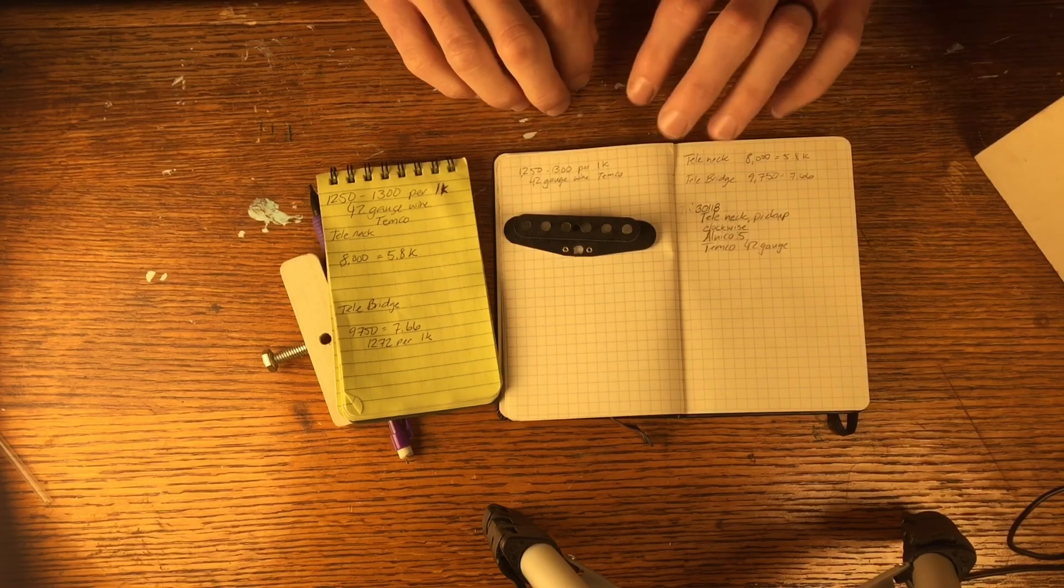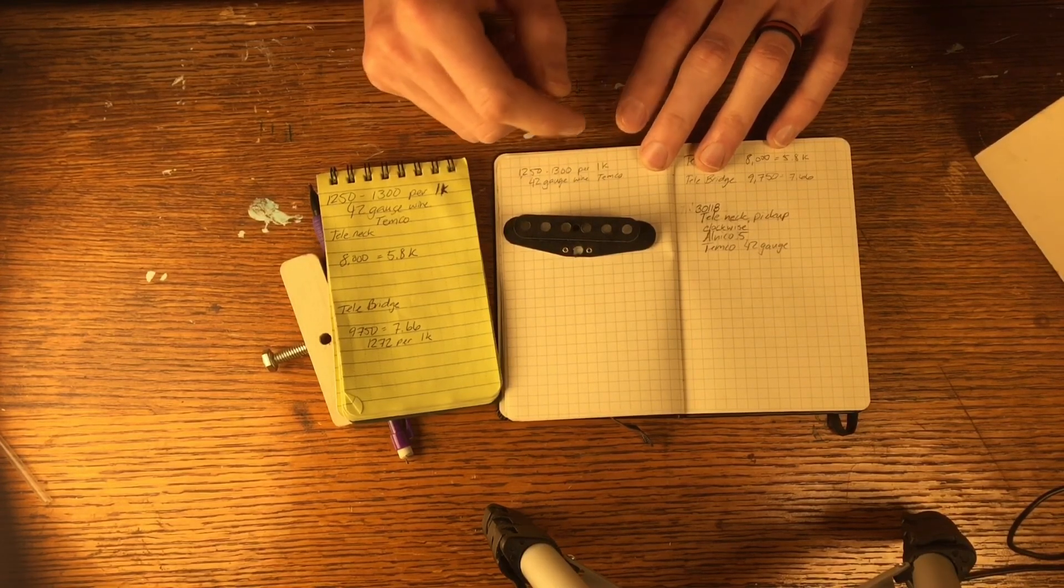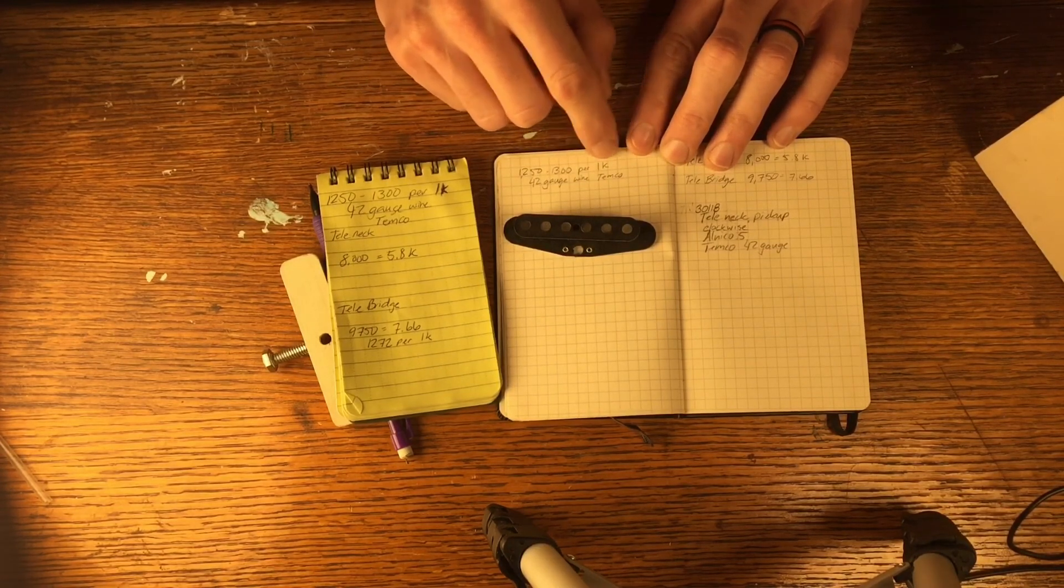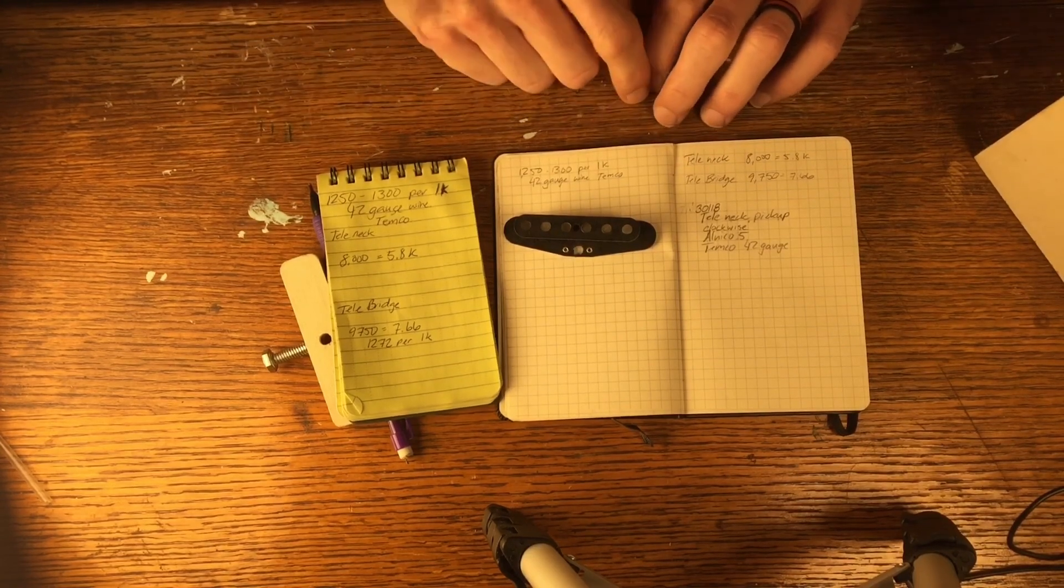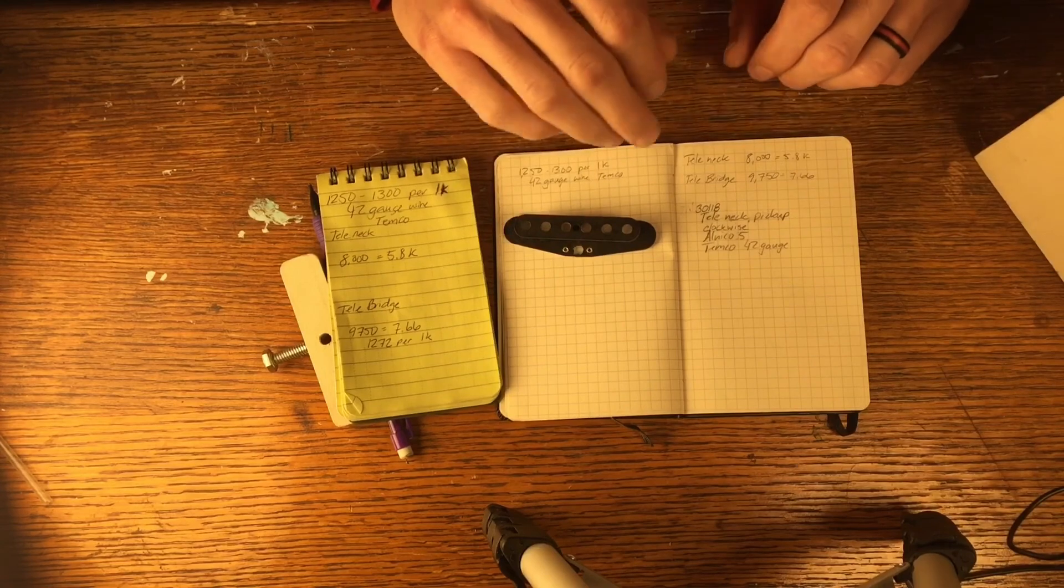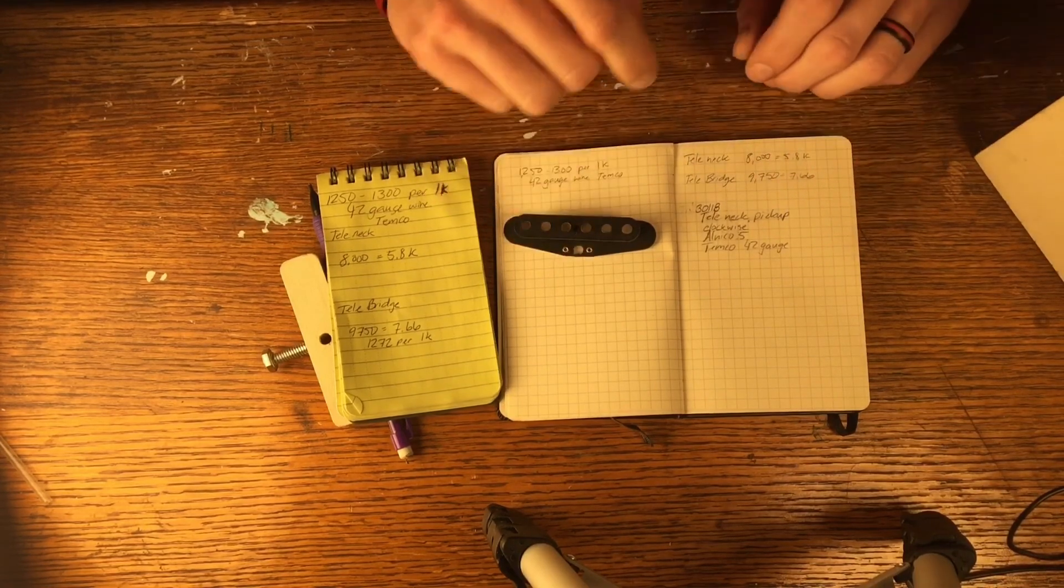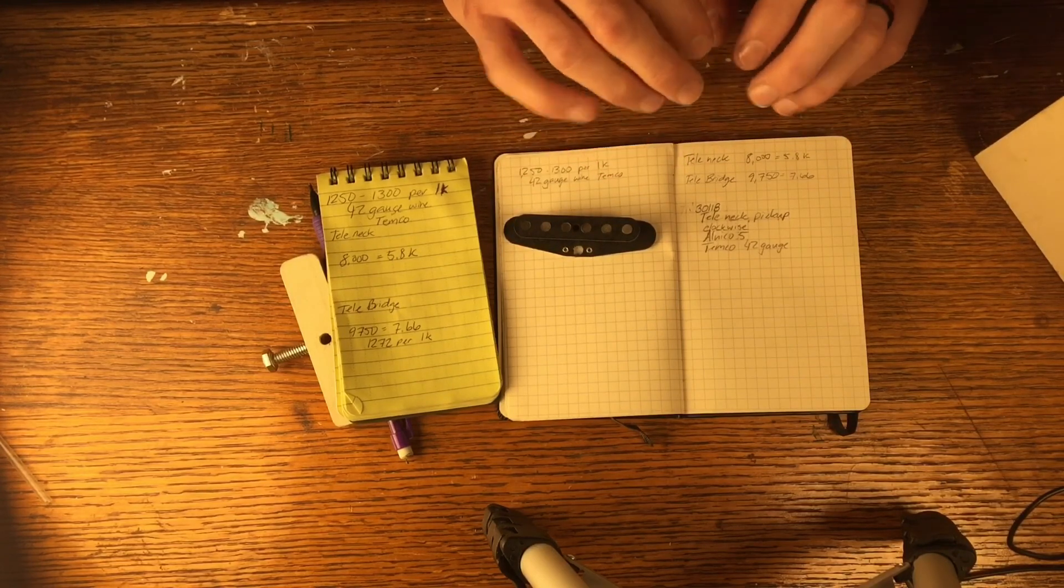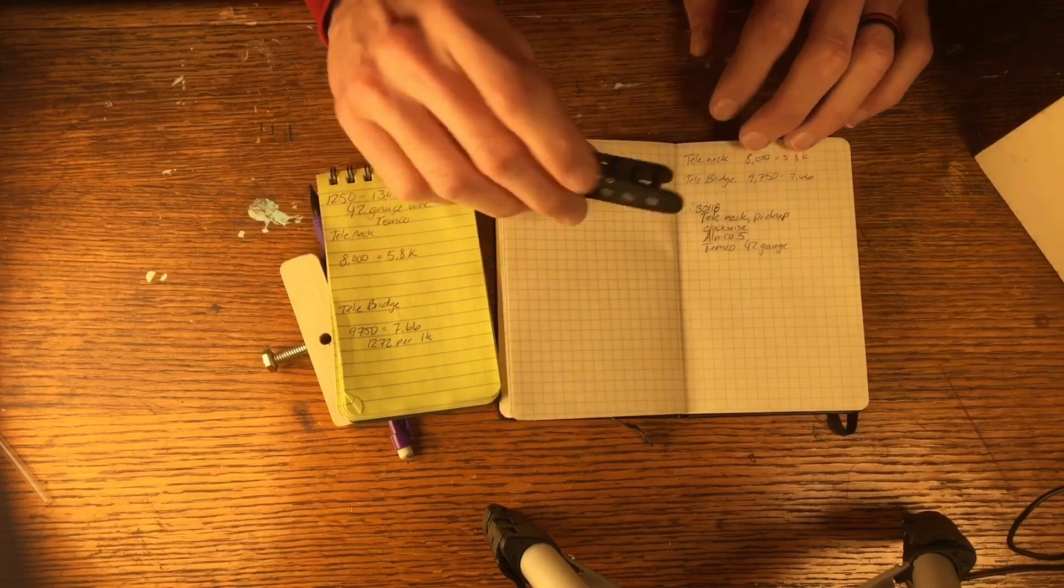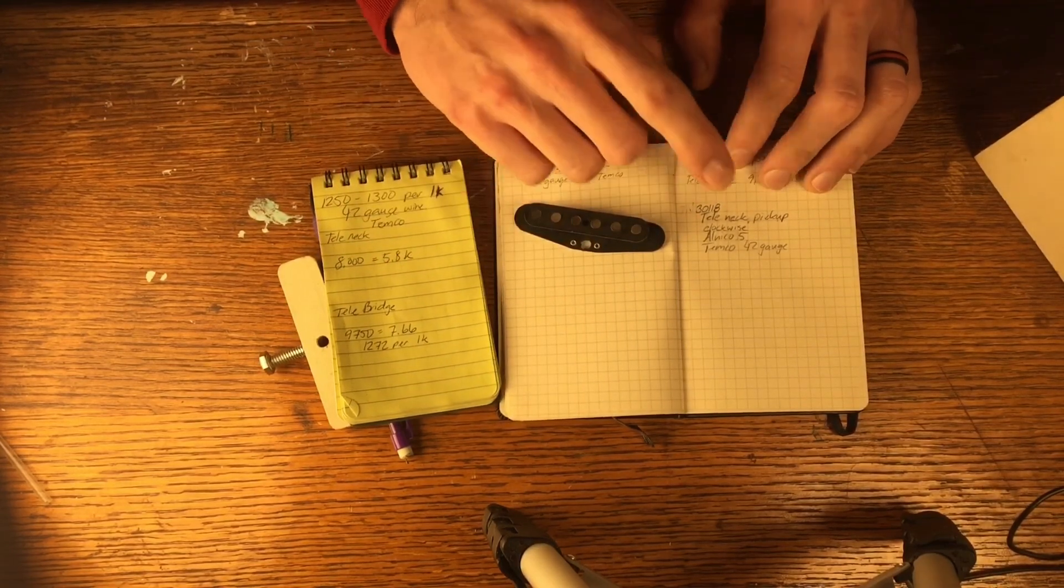As I did the math on that, took the averages and figured out between 1,250 to 1,300 wraps to get 1K out of that 42 gauge Timco wire. That's why I was saying to make sure you document everything, even the stuff like the wire that you've used and the characteristics of it. As far as naming this one, I've just put this down here for now, this is the date.